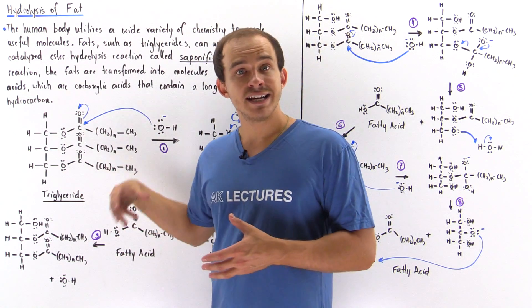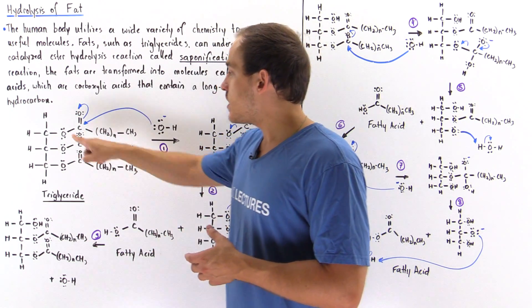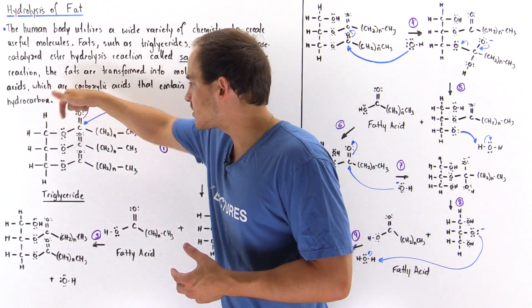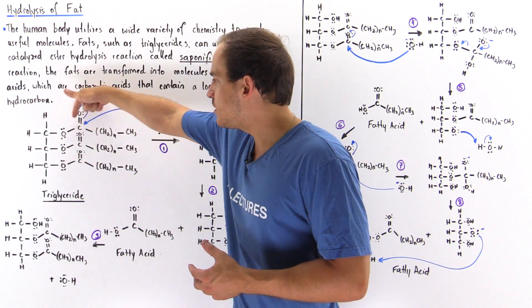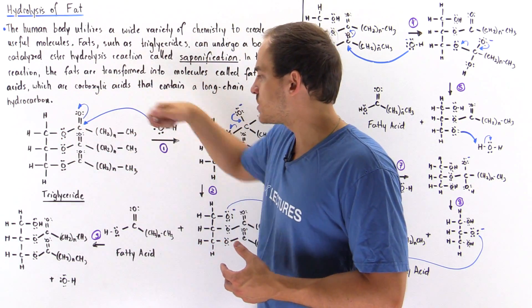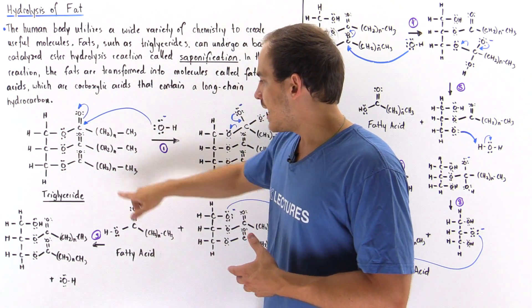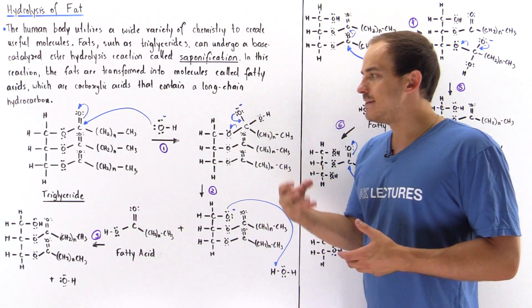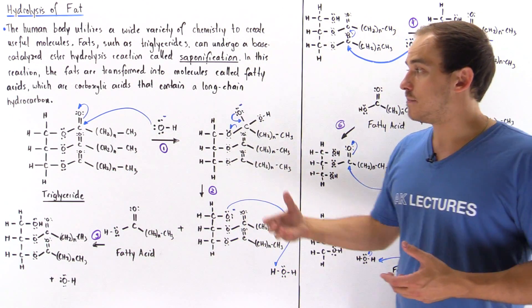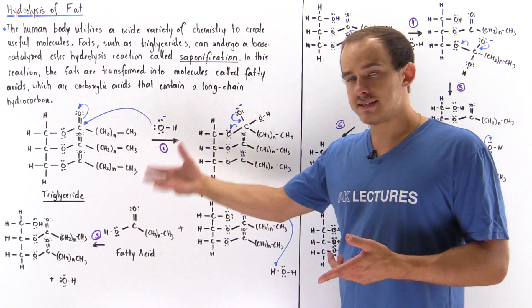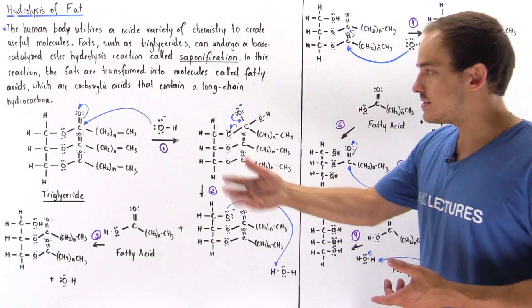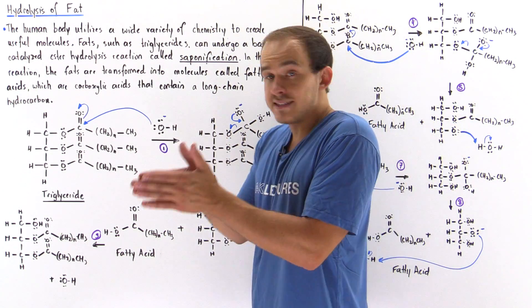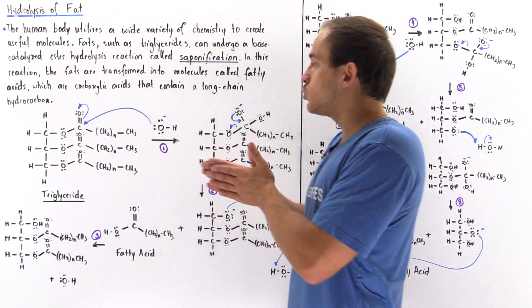A triglyceride is basically an ester molecule. We have a three-carbon backbone, and attached to this backbone we have three identical groups, where N designates any even number — it could be 12, 14, 16, 18, 20, and so forth. Usually it goes between about 10 to 22.